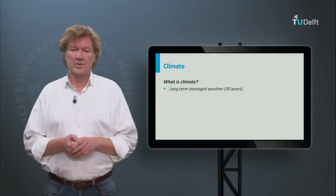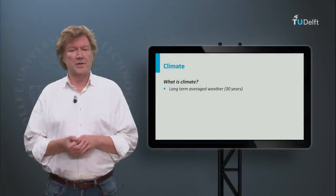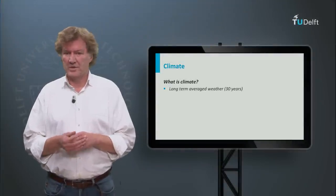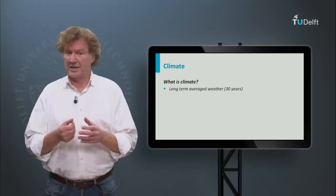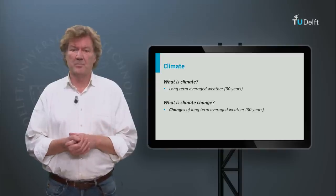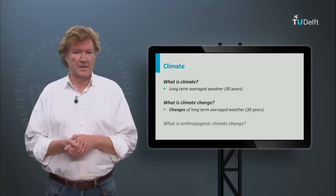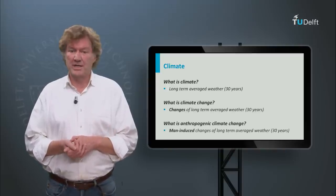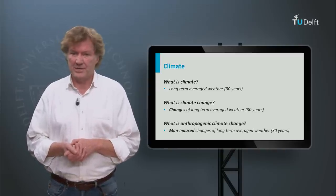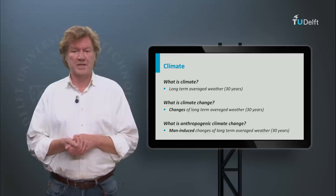Climate is somewhat loosely defined as the average weather of a period of 30 years. When we speak of climate change, we refer to changes of the mean properties of the weather. Anthropogenic climate change refers to the impact of man-induced changes.